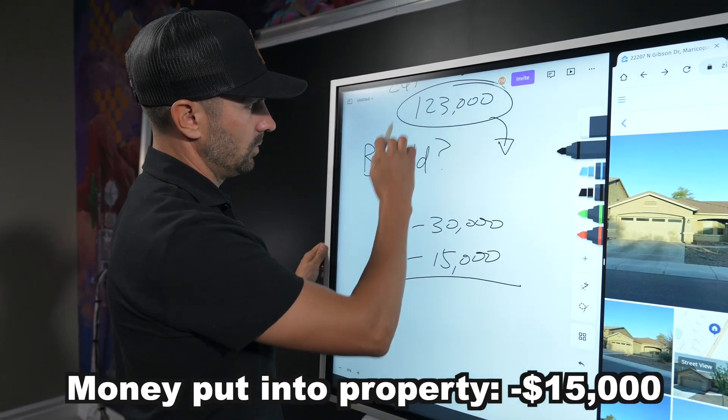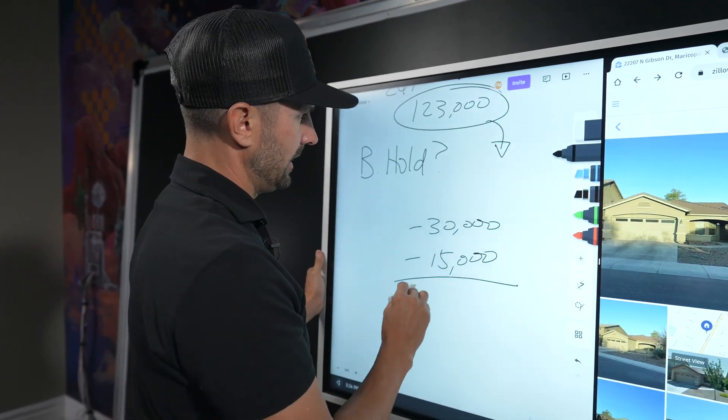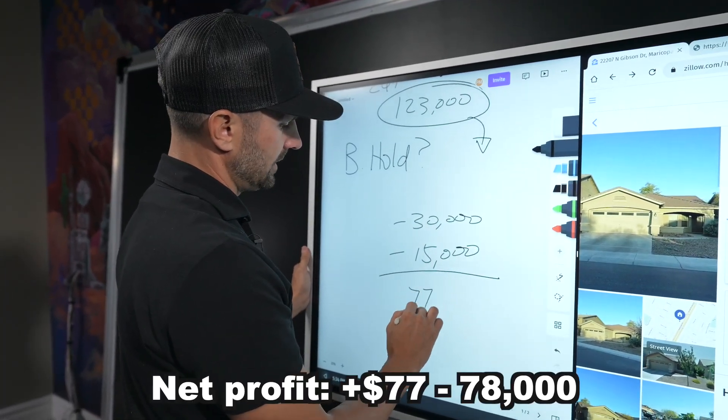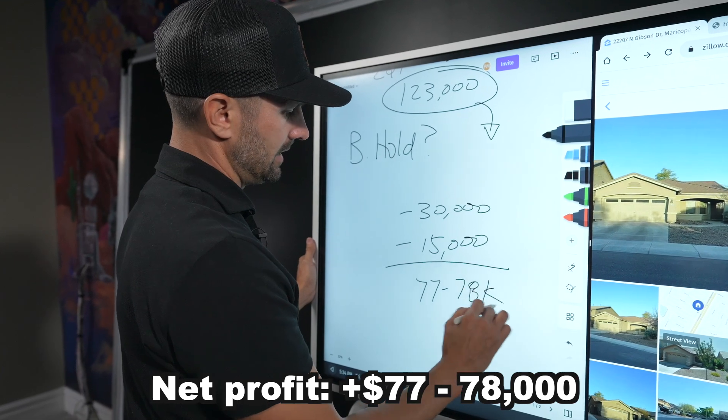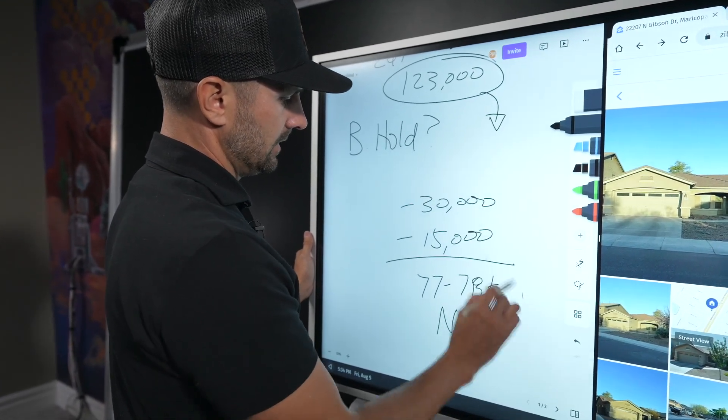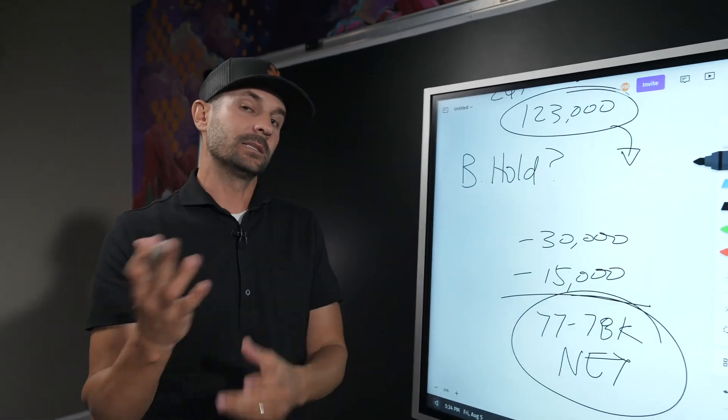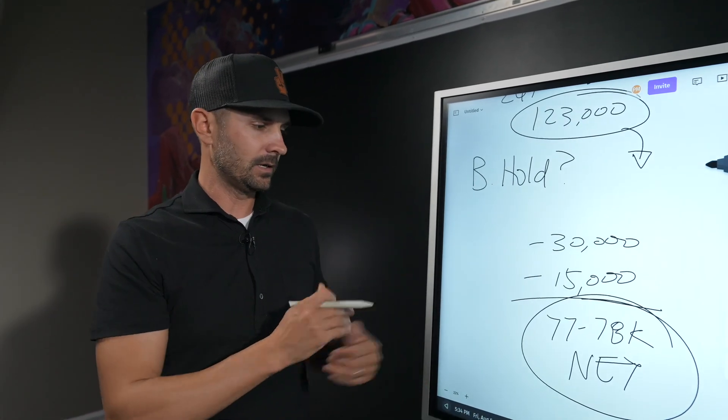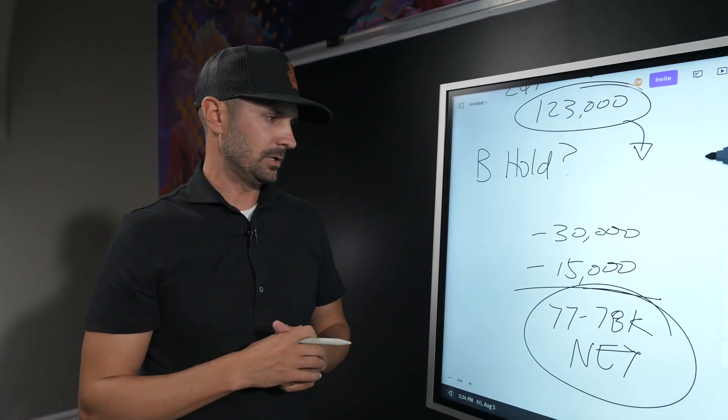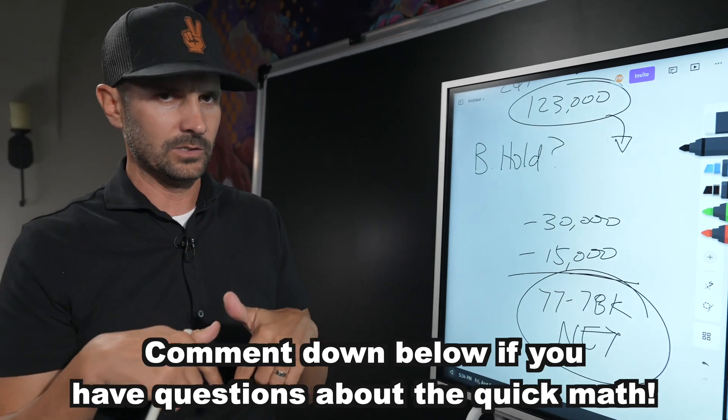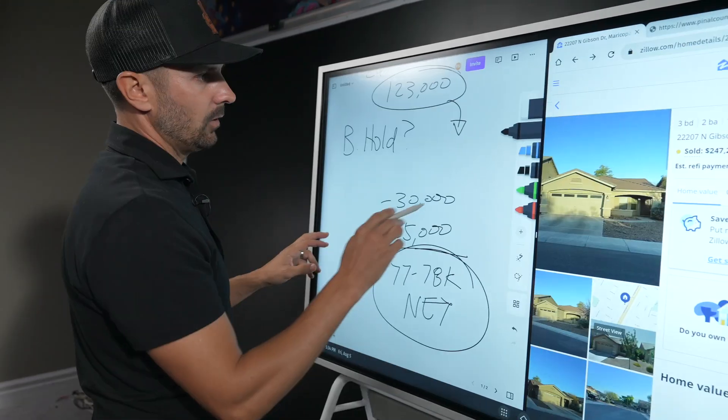We probably have to put about $15,000 into the property. So $123k subtract $45k looks like we'd make about $77,000 to $78,000 net. I was originally thinking this house would make $100k, but it looks like it's not going to. Looks like it's going to make around $77k to $78k if I have a question about this quick math I just went through. Please make a comment down below.